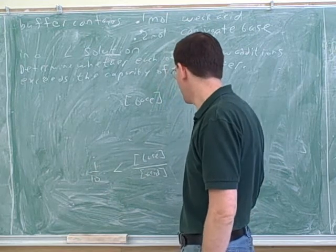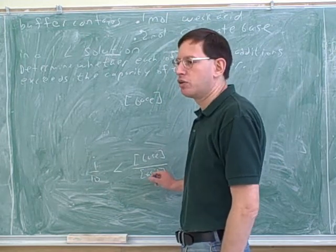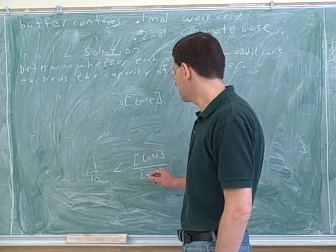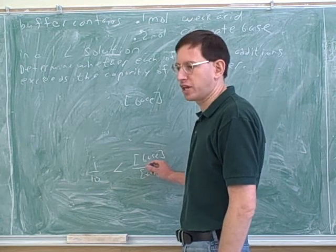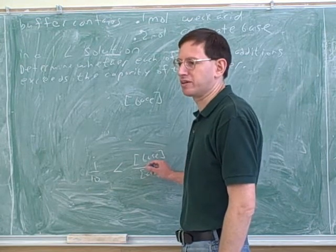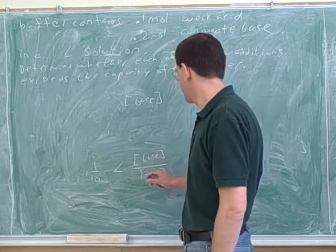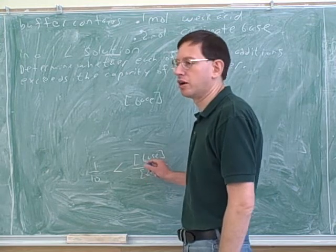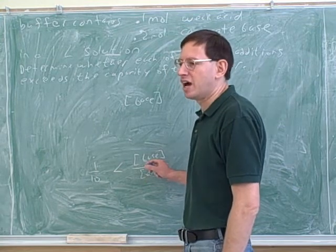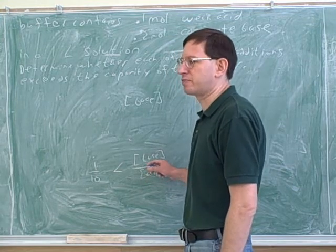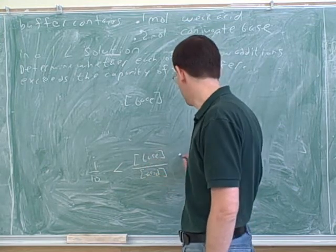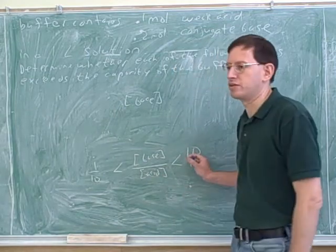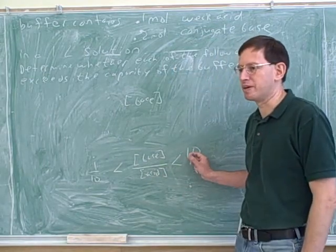What about if you use up almost all of the acid? As the amount of acid goes down, this fraction gets bigger and bigger. Technically, when the concentration of acid is zero, this would go to infinity. But the buffer starts to break down even before you get to zero acid. And what they told you is to use 10 as the upper limit for the ratio.